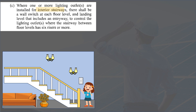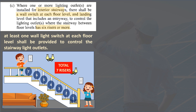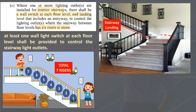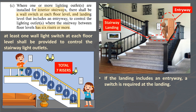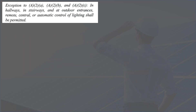If interior stairways have six or more risers between floor levels, at least one wall light switch at each floor level shall be provided to control the stairway lighting outlets. If less than six risers, at least one light switch is required. Some stairways have one or more landings between floor levels. If the landing includes an entryway, a switch is required at the landing. A landing with no entryway shall not require a switch and will be considered as one of the risers of the stairway.